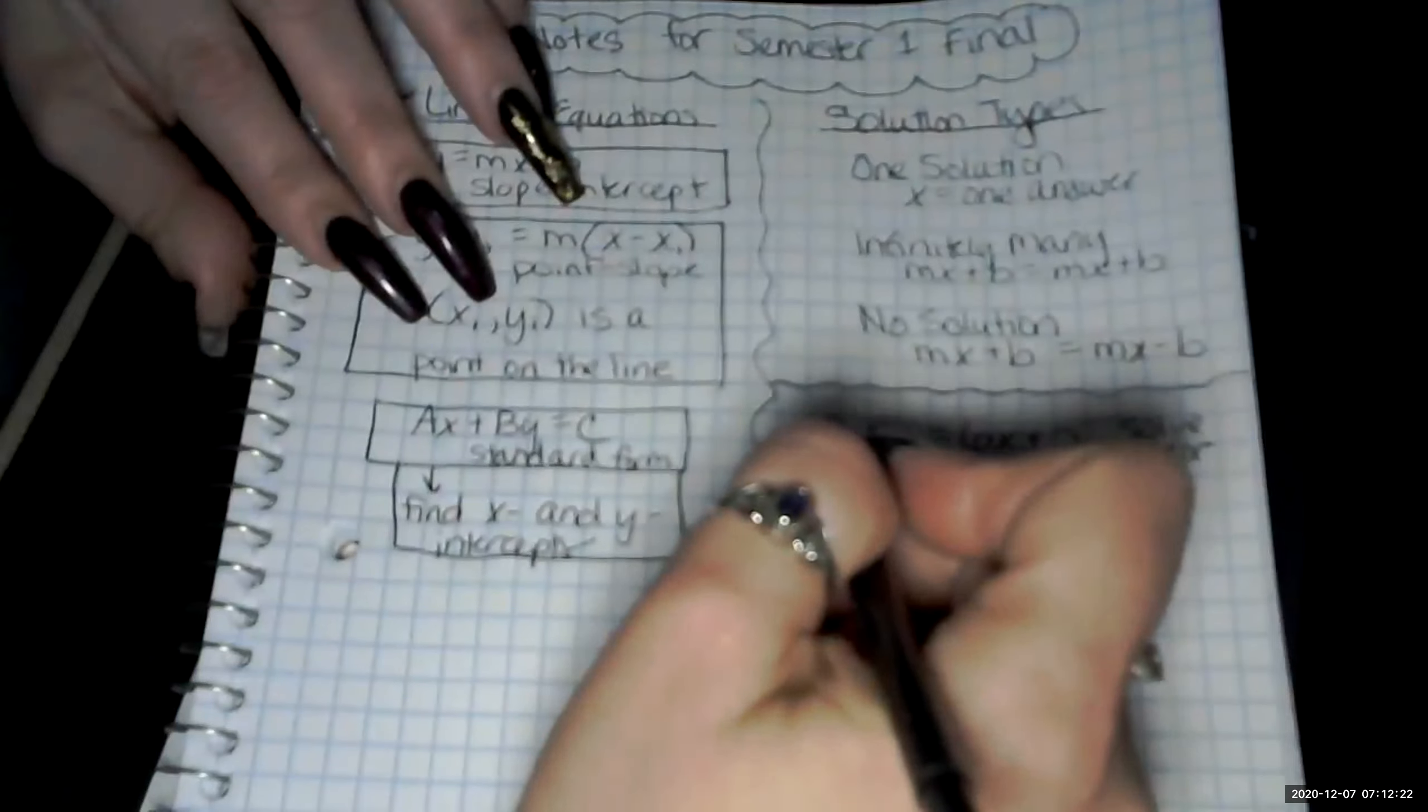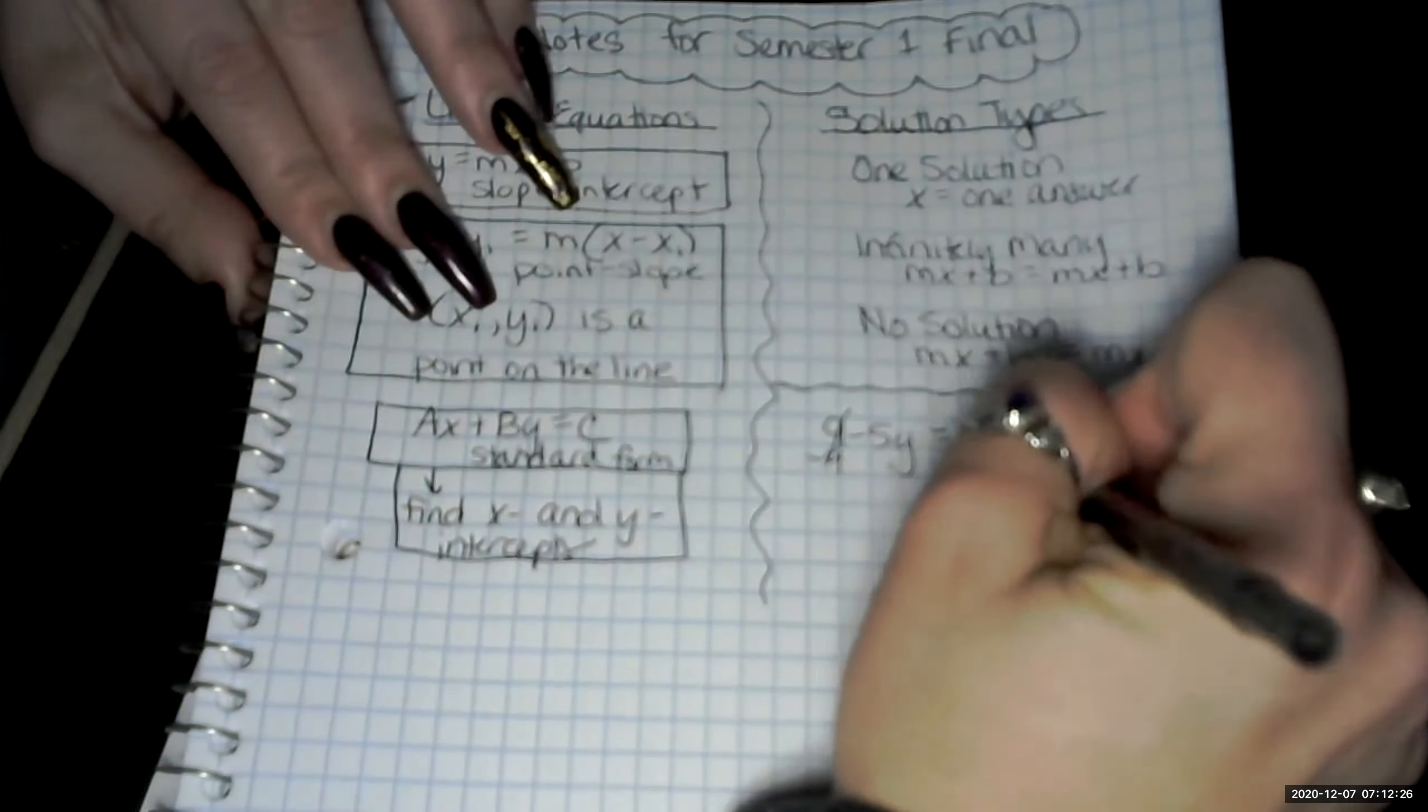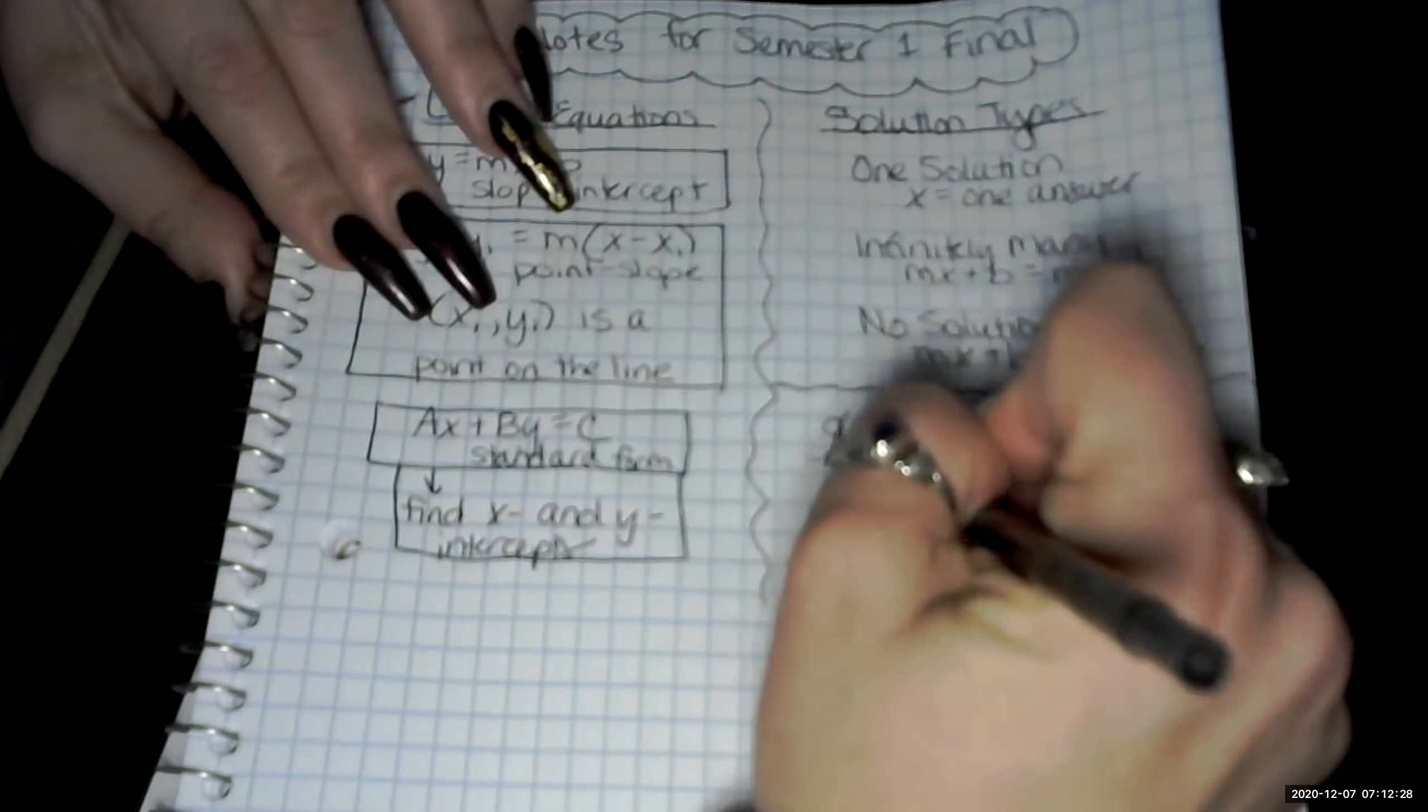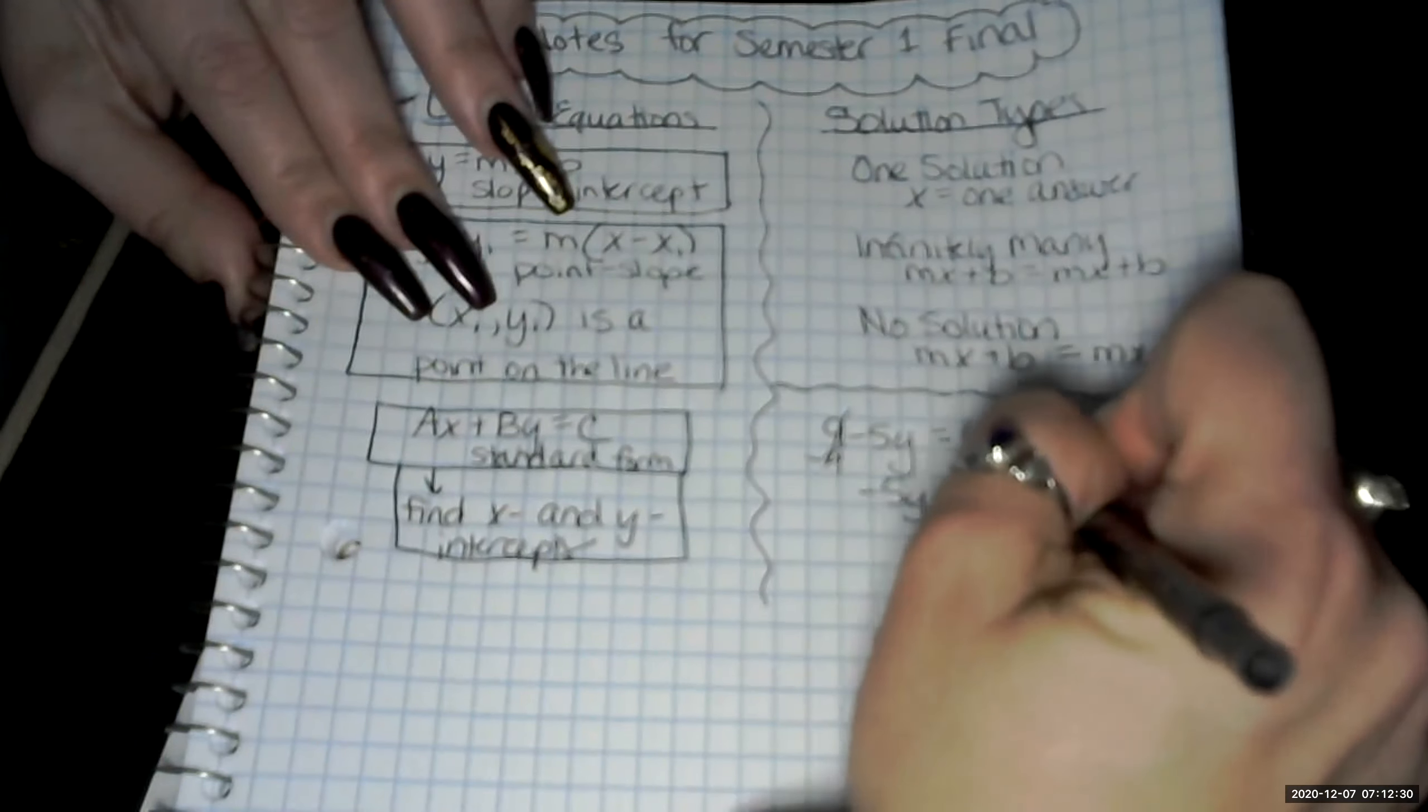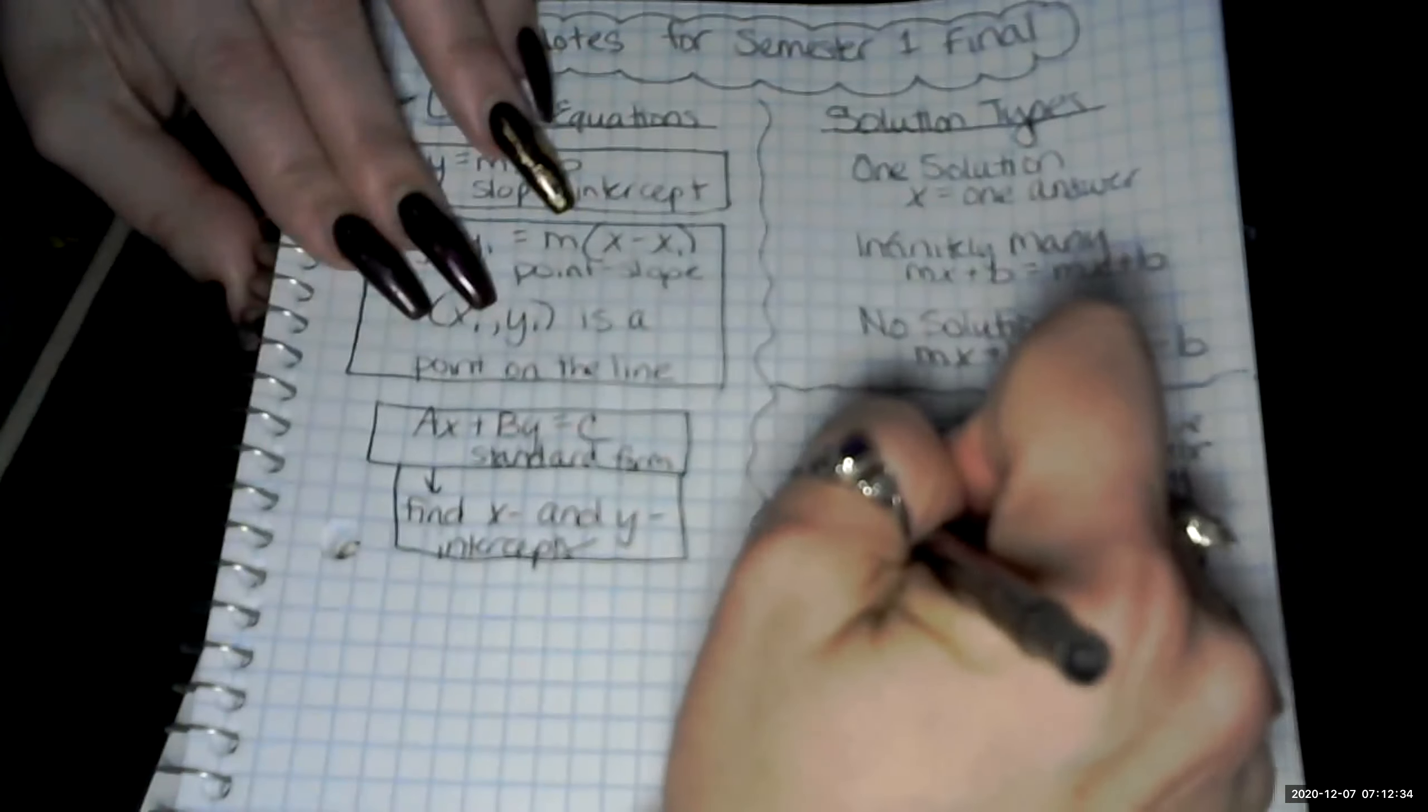Then we're subtracting 9 on both sides. We get negative 5y equals 6x minus 7. And then we divide everything by negative 5.